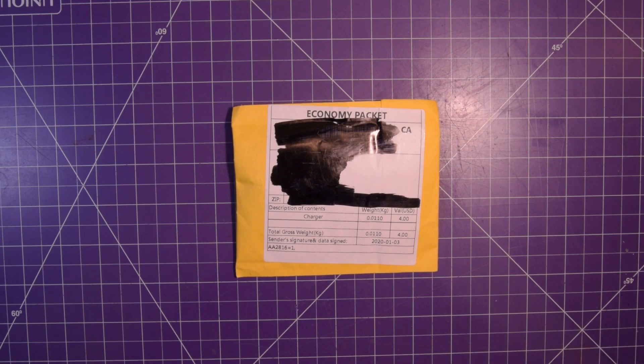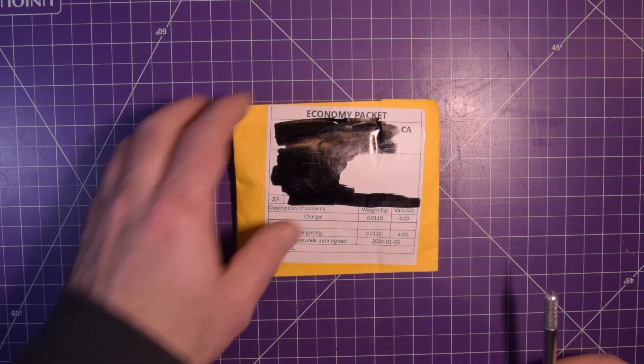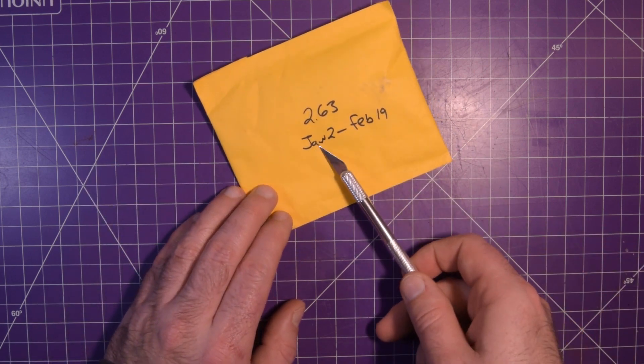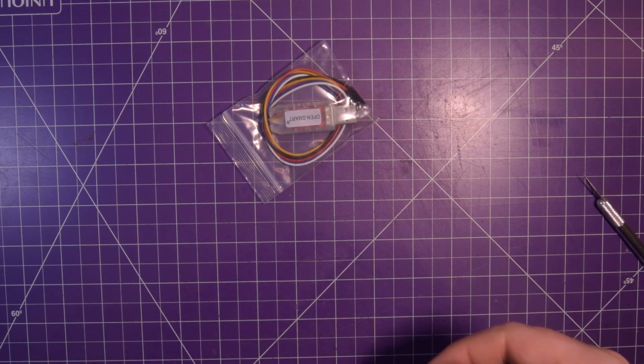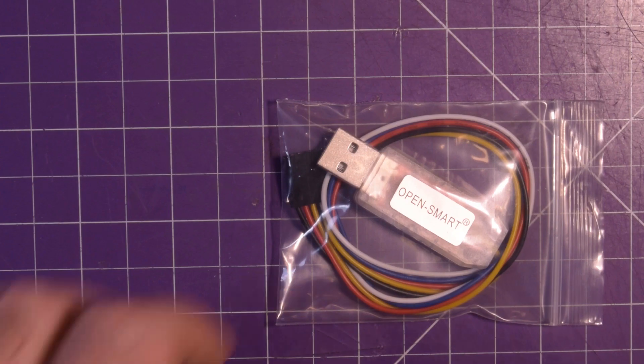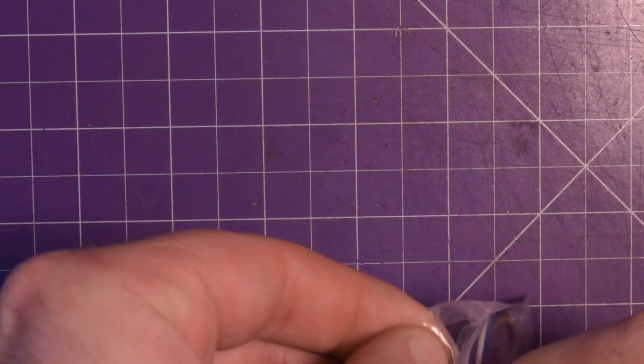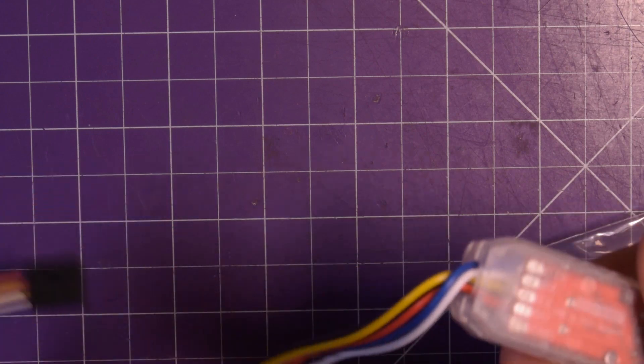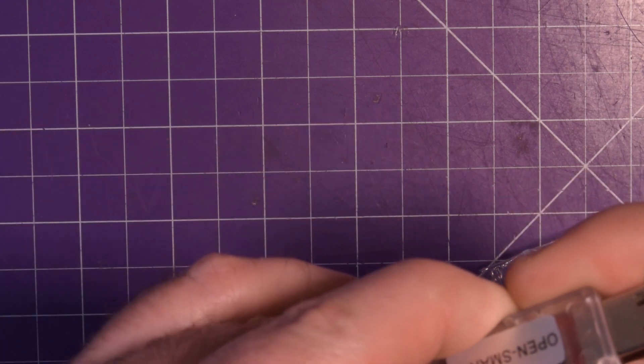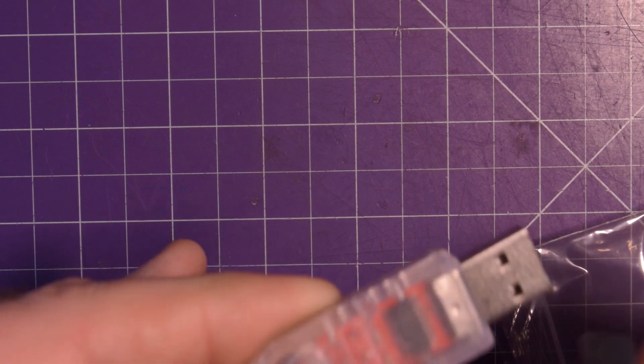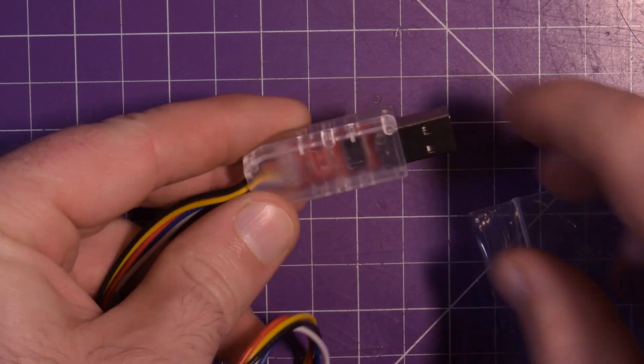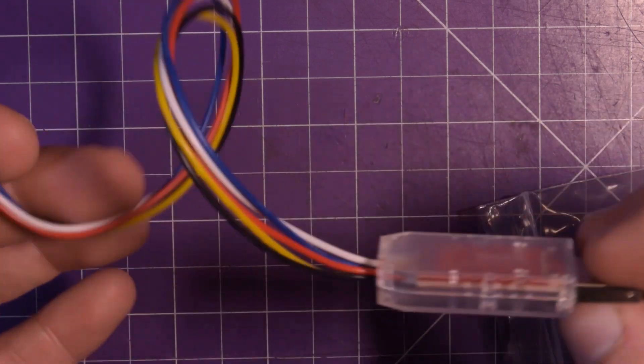Next one up is this one here. This one's described as a charger - we do like chargers here. $2.63, January 2nd to February 19th. I don't know if that's a charger per se. Let's take a little bit of a closer look. So I think this is a programmer, not 100% sure. It's been a little while.